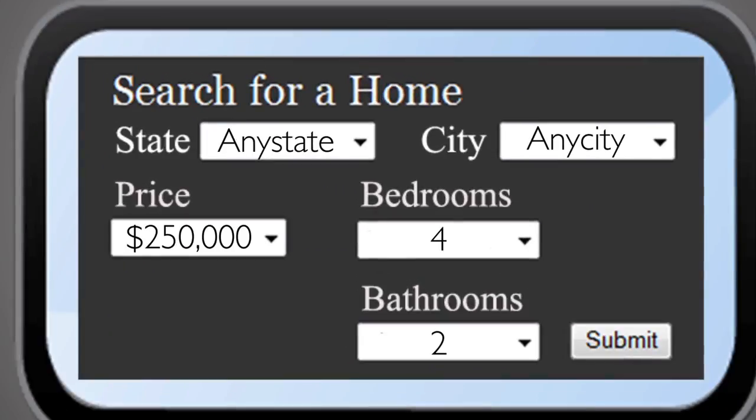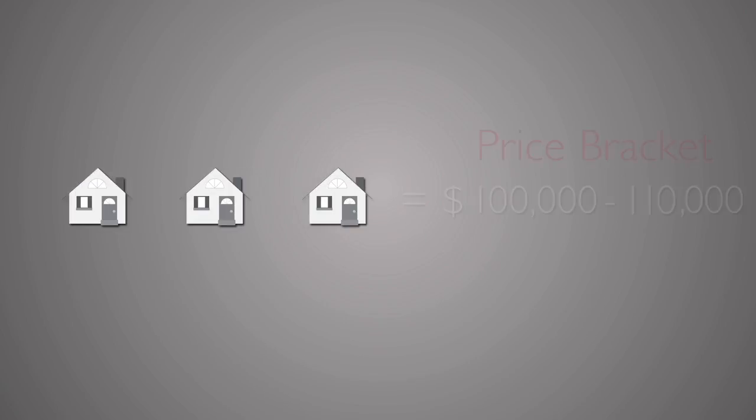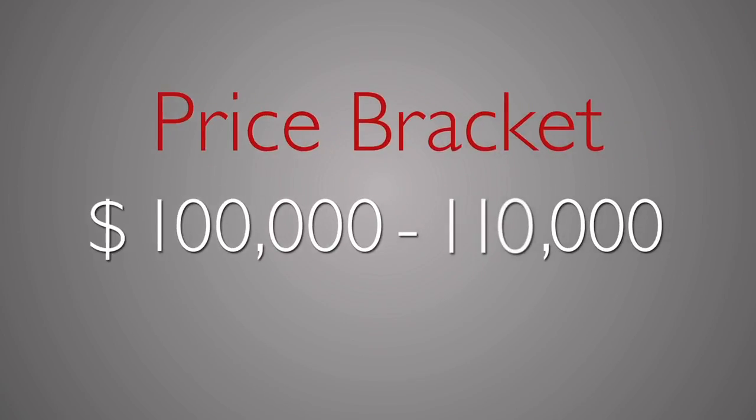The search results group homes in price brackets, often displayed in $10,000 or $25,000 increments. These brackets drive what buyers see.